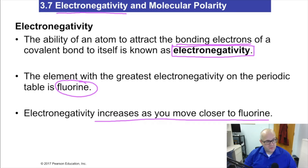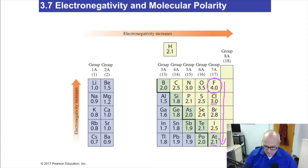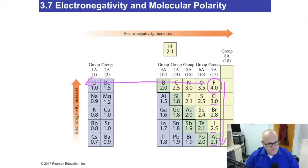As you go from left to right through a period, electronegativities go up. As you move from top to bottom through a group, they go down. So here's fluorine — notice as we go down the group, the numbers get lower. Notice as we go across a period, the numbers get lower going away from fluorine. Fluorine is the most electronegative atom; everything else is less. Everyone is compared to fluorine.